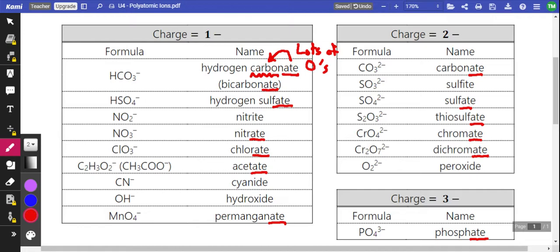Now for some elements, it's a different number of oxygens than others. So for a lot of things that end in ATE, that means three oxygens. So like carbonate or bicarbonate has three oxygens. Three over there. Nitrate has three oxygens. Chlorate has three oxygens.